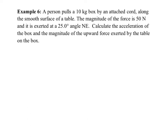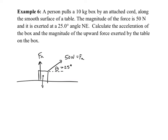This is similar to the sled example, but now it's a box on a table. Here's the table surface, the box, the rope at an angle, and the applied force of 50 newtons at 25 degrees. The free body diagram will include gravity and the normal force. The surface is smooth, so we can assume it's frictionless for now.